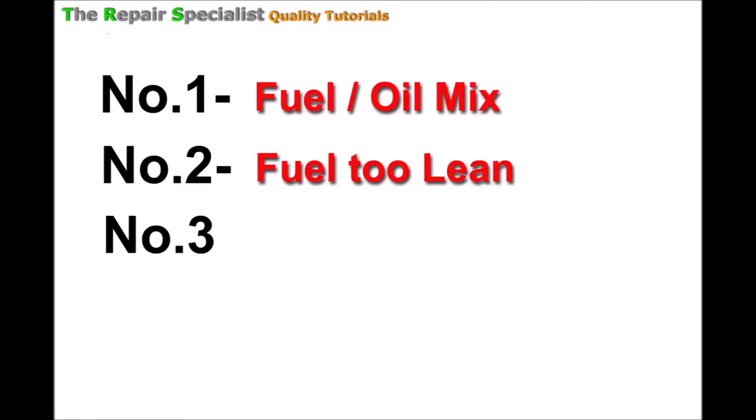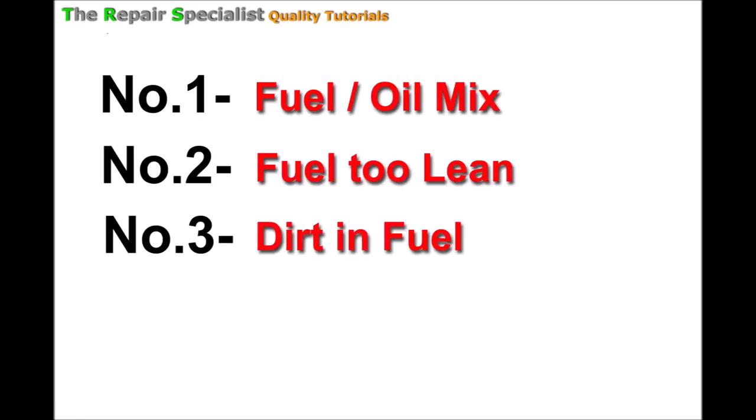My third and final reason now for chainsaw engine damage is contaminated fuel or dirt in the fuel. Imagining now that we've got a great oil to fuel mix with a good premium oil and good quality fuel, if we've got a situation where we've got crud and dirt resting at the bottom of the fuel tank, even if it's not always obviously visible, then it only takes a slight malfunctioning of some sort, some damage of the fuel filter here or it being missing, and we're going to get that crud going all the way through the fuel lines and through the carburetor and into the engine.